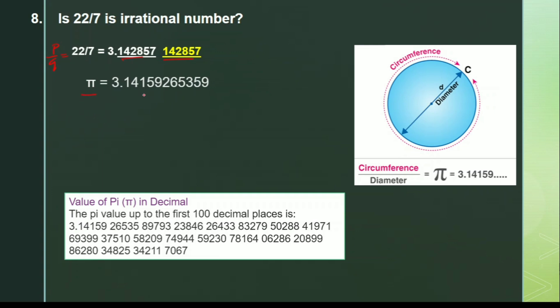But the value of pi does not terminate and does not repeat, so it is an irrational number. Pi is defined as circumference divided by diameter — that is an approximate value, which is why it is irrational. The decimal expansion of pi up to 100 decimal places confirms it never terminates.